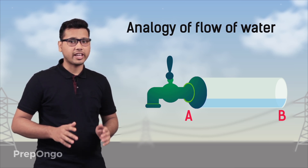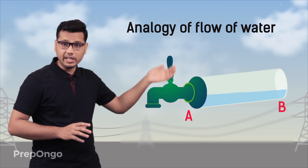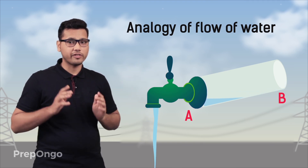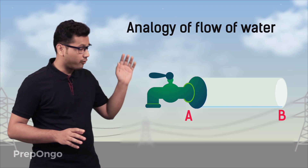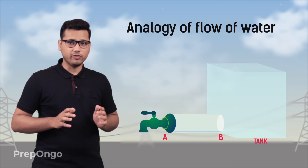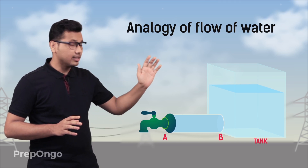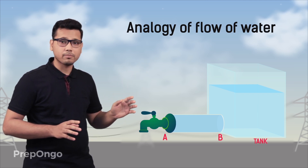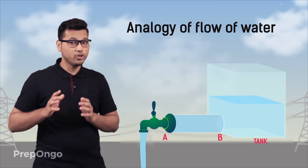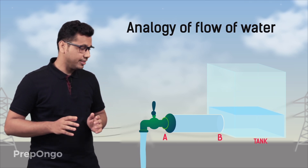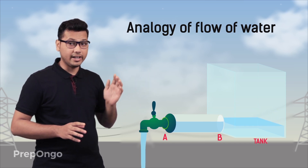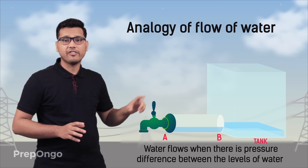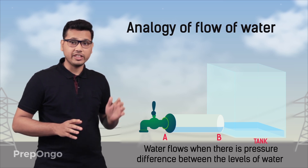Now to make this water flow, what can I do? If I raise end B, there is a water level difference at point B and point A, so the water will start flowing. Also, if I attach a water tank at point B and fill it with water, there is a water level difference at points A and B, so if I open the tap water will start flowing. But water will stop flowing when the water level at B and at A comes to the same level. So we can say that water flows when there is a water level difference, or pressure difference, between the levels.